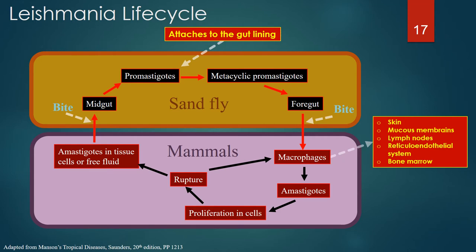Metacyclic promastigotes penetrate macrophages of the skin, mucous membranes, lymph nodes, reticuloendothelial system, and bone marrow. Within as little as 30 minutes, they transform into amastigotes and begin proliferating within the macrophages. Infected cells eventually rupture, releasing large numbers of amastigotes that infect other cells, proliferate, rupture, and release more amastigotes to continue the cycle. A sandfly feeding on an infected host ingests amastigotes to complete the life cycle.